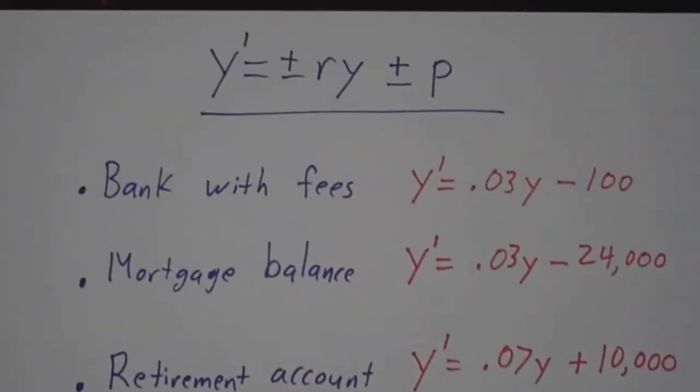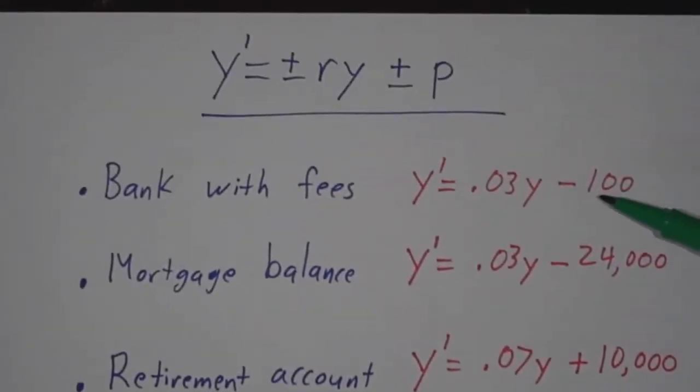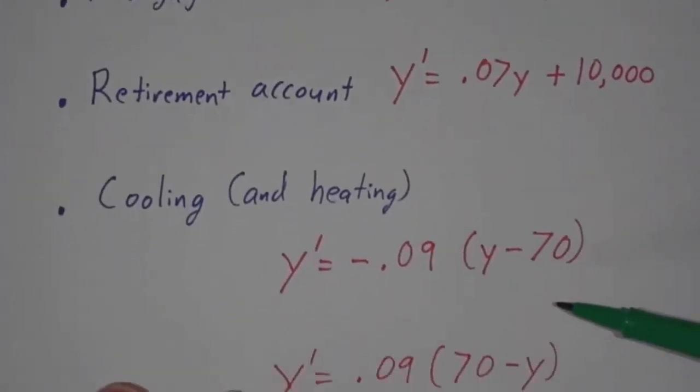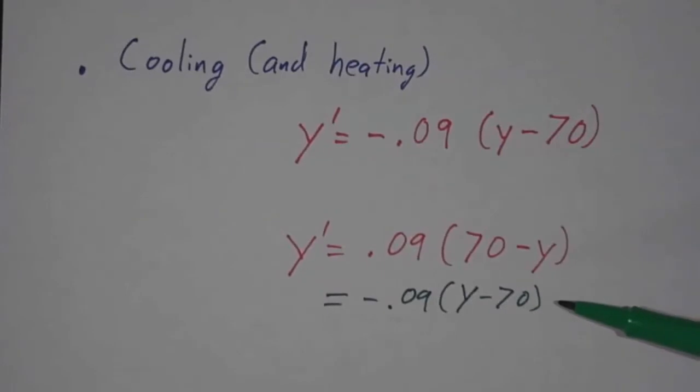So whether we're talking about financial matters—banks with fees, mortgages, retirements—or heating and cooling, or a whole lot of other problems, you often see exponential growth away from equilibrium or decay towards equilibrium rather than towards zero.